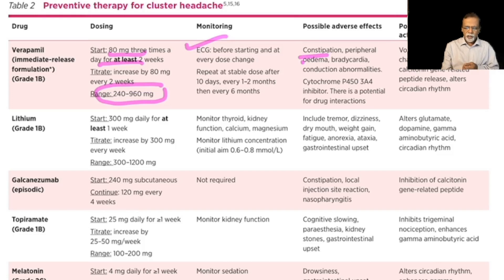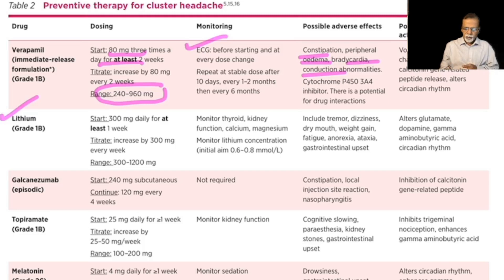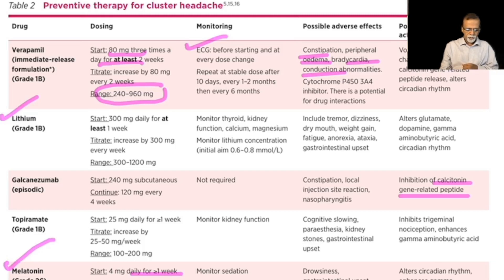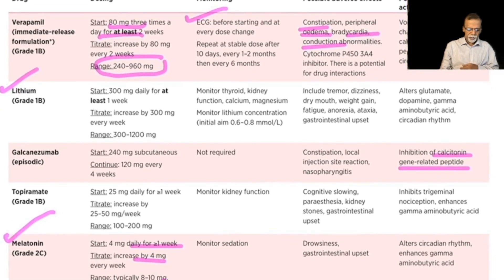Verapamil can cause constipation, peripheral edema, bradycardia, and conduction abnormalities, and there is potential drug interaction with drugs metabolized through cytochrome P450. Lithium has also been shown to be effective. Calcitonin gene-related peptide inhibition drugs are sometimes used. Topiramate and melatonin are additional options — melatonin can be started at 4 mg daily for one week, increased by 4 mg each week, with a typical range of 8 to 10 mg. So the main prophylactic drugs are verapamil, lithium, and melatonin.